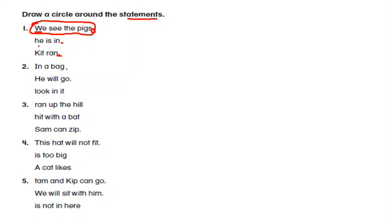Number two: In a bag. It begins with a capital letter, it doesn't end with an ending mark, and it doesn't make sense. Here, we will go. Number three: Ran up the hill, hit with a bat, and Sam can zip. So the sentence that meets all the conditions of a statement is Sam can zip. Number four: This hat will not fit. We will sit with him is not in here. We will sit with him is the right answer.